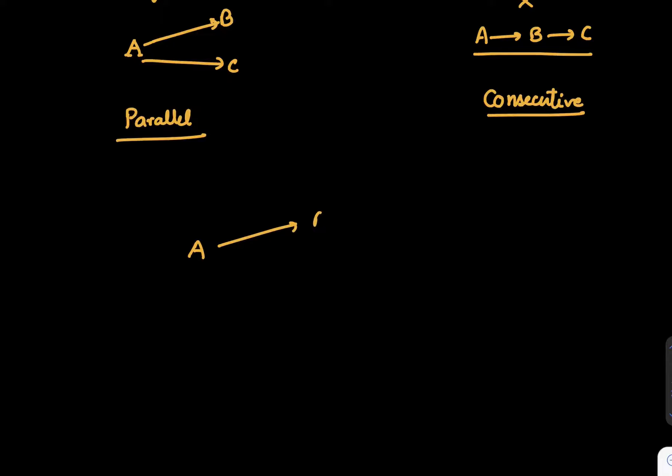Let us write A gives B and C. So what will be minus dA over dt, or what is rate of disappearance of A? If rate constants are k1 and k2, and let us say order with respect to both is first order. Okay, for both the parts.